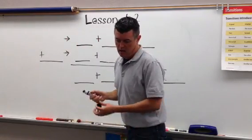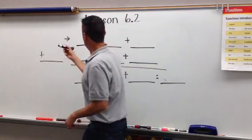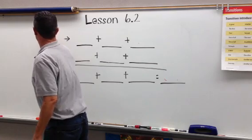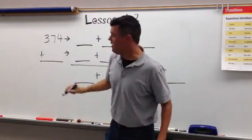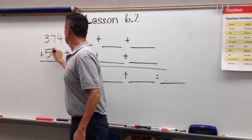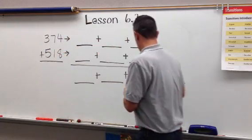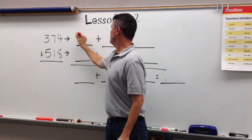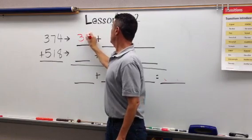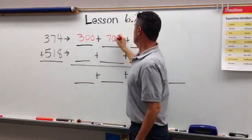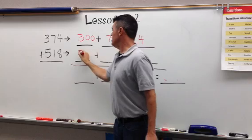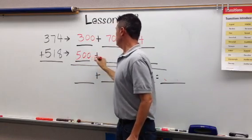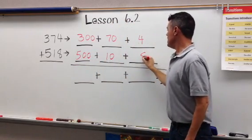And now we're going to do 374 plus 518. And it goes pretty smoothly and very much the same way as the last one. 374 is 300 plus 70 plus 4, 518.